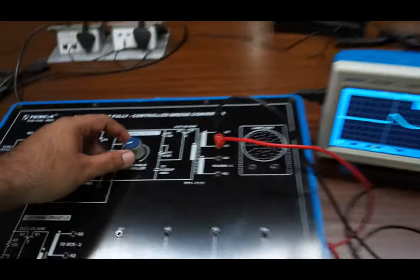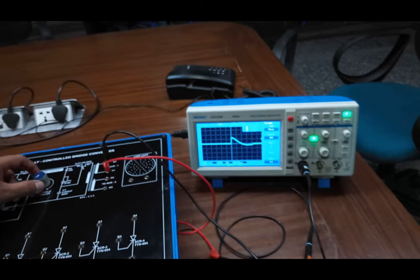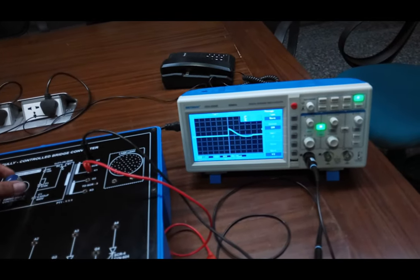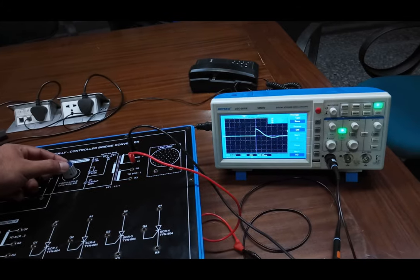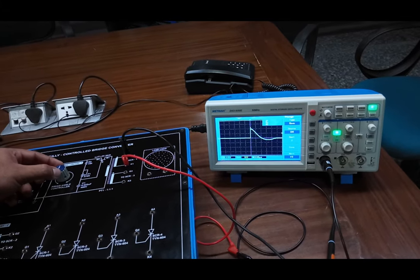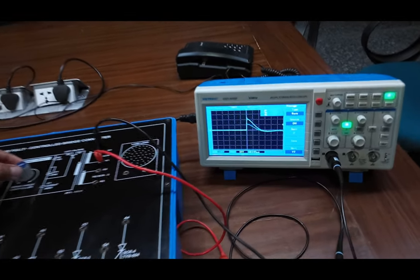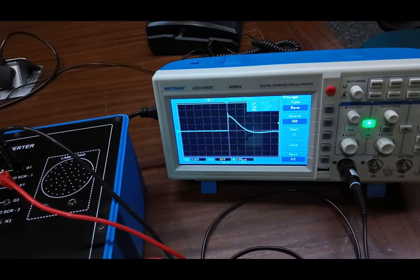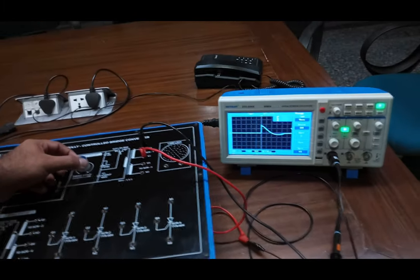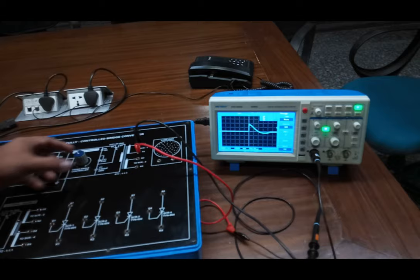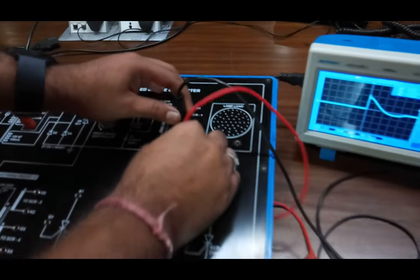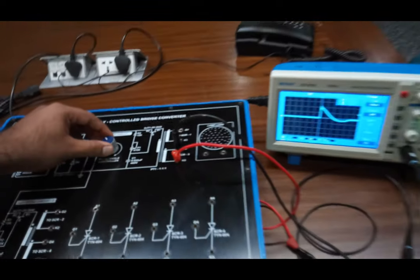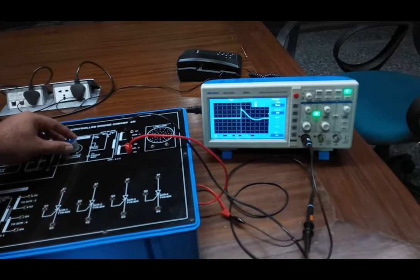You can see the gate pulse at the CRO. Now, as I move the gate firing angle controller, the gate pulse also varies with this controller. Same as, we can observe gate pulse for different gate and anode circuits.